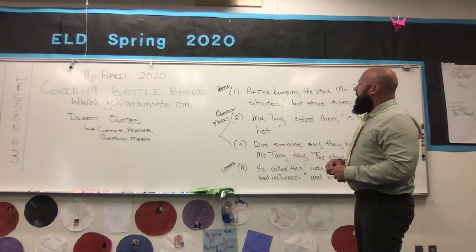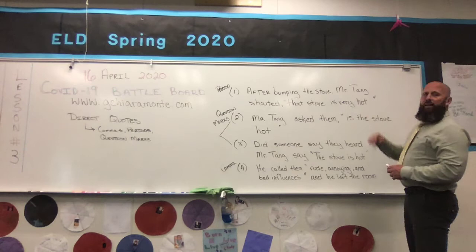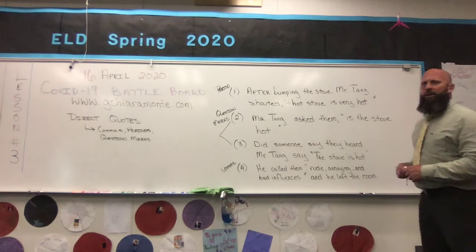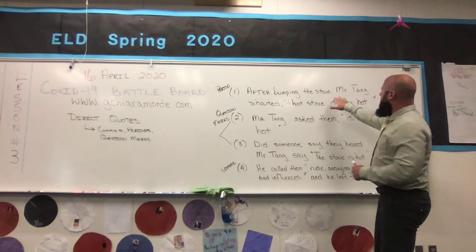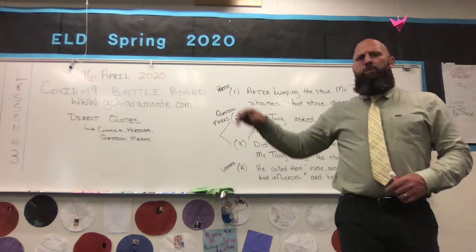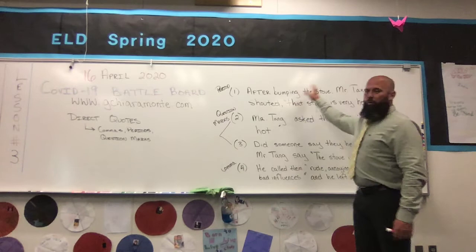Direct quote — remember that. The first example is taken directly from your daily language practice this week, and it goes like this: 'After bumping the stove, Mr. Tang shouted, that stove is very hot.' What do we have first in the sentence? 'After bumping the stove' — is that an independent clause or dependent clause? Good — dependent clause. So we have a comma. Then we have 'Mr. Tang shouted,' which can stand alone. So we have the independent clause and the direct quote.